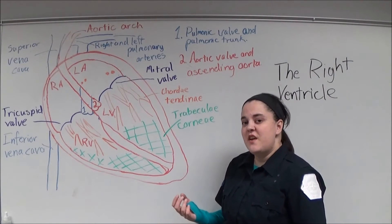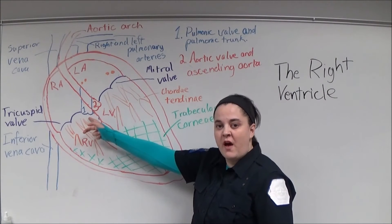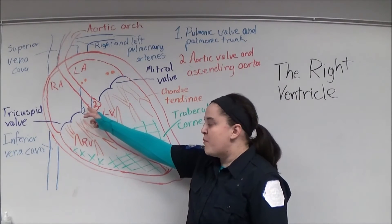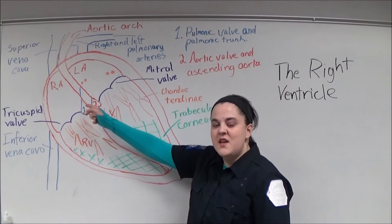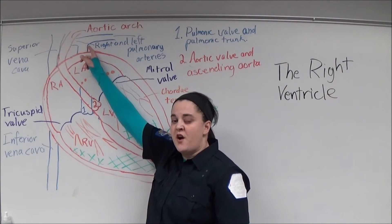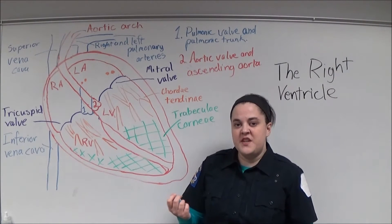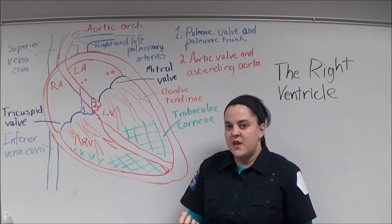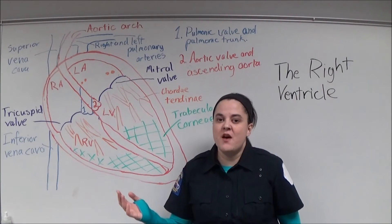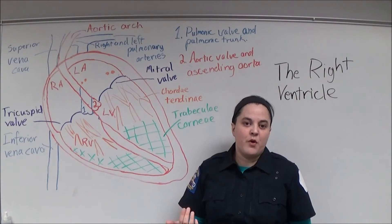When systole occurs in the right ventricle, blood is forced through one of the two semilunar valves, known as the pulmonic valve, to the pulmonic trunk. It then travels up the pulmonic trunk to the right and left pulmonary arteries, where the deoxygenated blood travels to the lungs where it's oxygenated, and then travels to the left atrium through the right and left pulmonary veins.